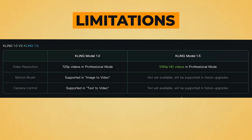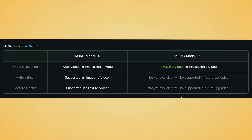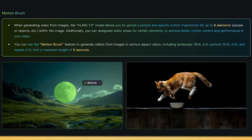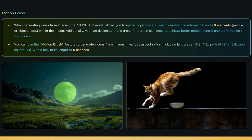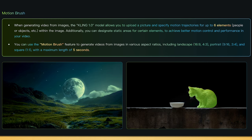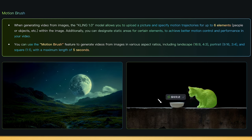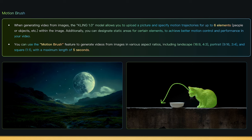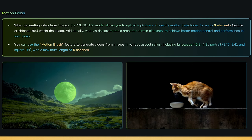There are some limitations to the 1.5 model at the moment. You can only create videos with text — you can't use motion brush with it yet, and you can't do camera control yet. Hopefully they add those shortly. And talking about motion brush, let's jump into that. This is a really cool feature that they've added, and it should give you a lot more control over how you animate your video. I'll show you a quick demonstration on how to use it.